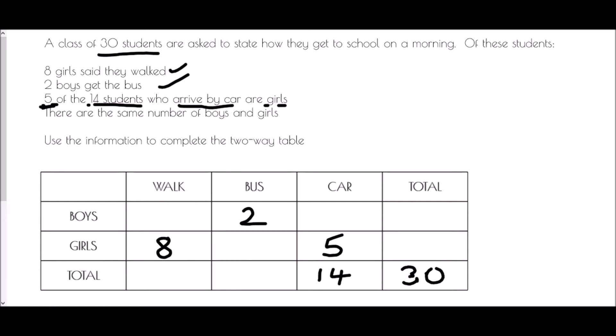The last piece of information is that there are the same number of boys and girls. We have 30 students in the class, so we just need to halve that number: we have 15 boys and 15 girls. Now, as I said, we didn't seem to have enough information to fill in the whole table, but what we've got now is enough to start filling in extra pieces by looking at the totals.